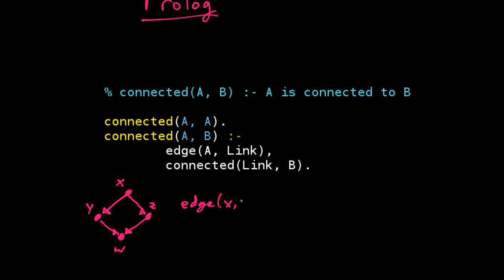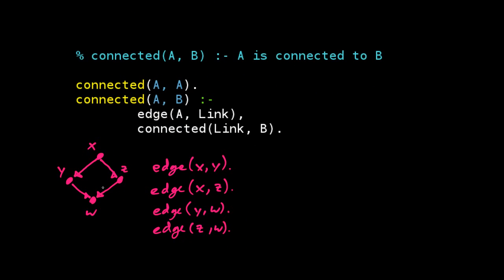Edge from X to Y, there's an edge from X to Z, there's an edge from Y to W, and there's an edge from Z to W. So here's our little group of facts that define our graph, and now we might have a query like connected X to W question. So this will be our query.